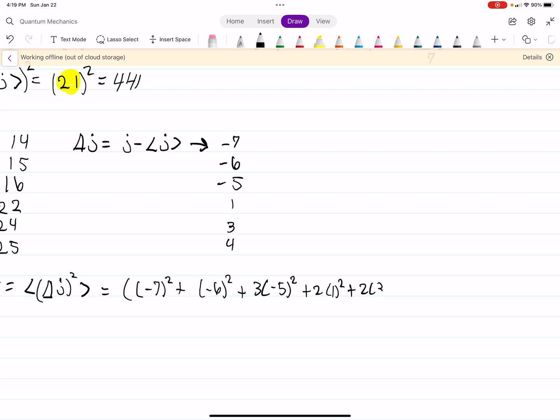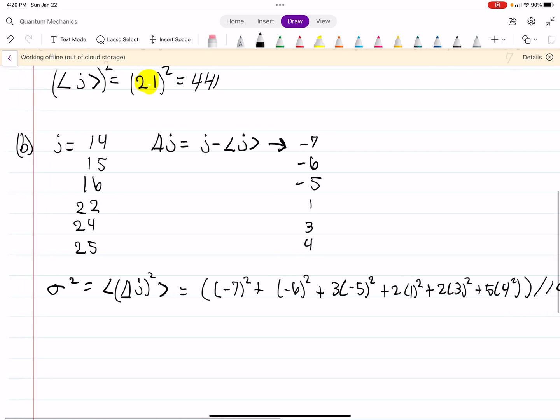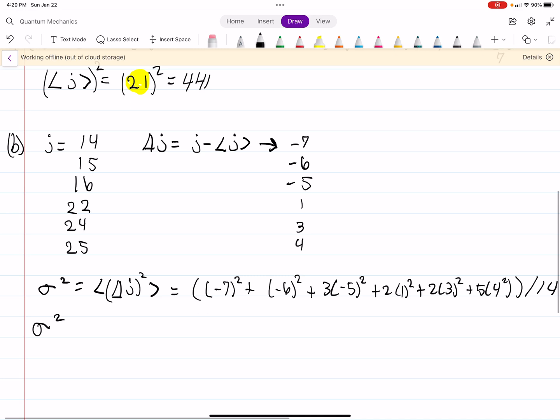Plus 2 times 1 squared, plus 2 times 3 squared, plus 5 times 4 squared. And that's all, again, divided by 14. So then I get sigma squared is 130 divided by 7. We're squaring both sides. Sigma is about 4.31.